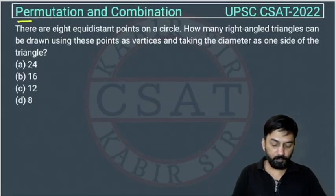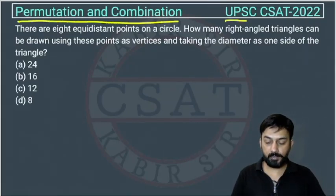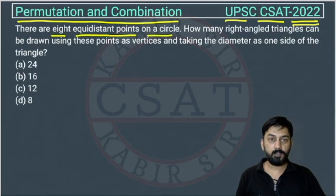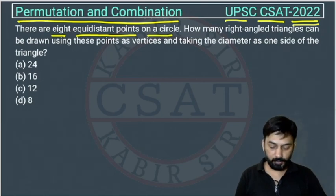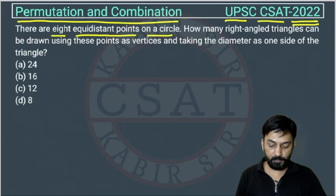This is a question from the permutation and combination chapter, asked by UPSC in their CDS paper of 2022. This is a good question — you should focus on it. The question says: there are eight equidistant points on a circle.